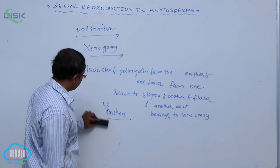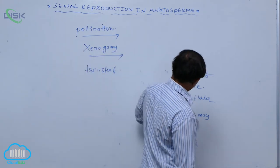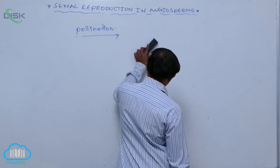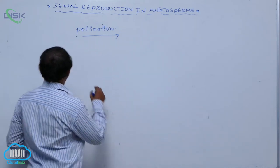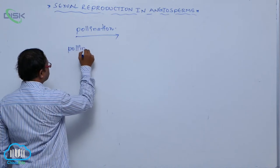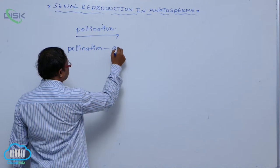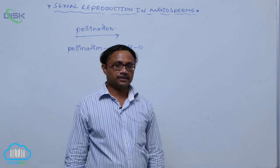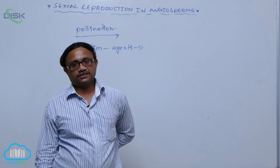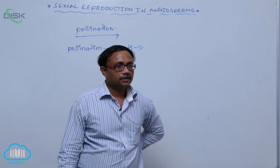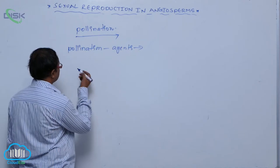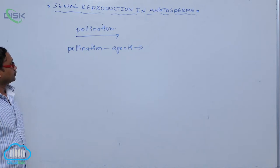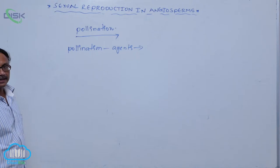There are different types of pollination. For the transfer of pollen grains to reach the stigma of another flower, certain factors or agents are involved. These are called pollinating agents — mediums by which transfer of pollen grains from the anther to the stigma of another flower takes place.